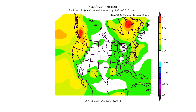First we're going to look at our temperature anomalies comparatively to normal using my analogs. My analog years are the same as the ones I used for my spring forecast: 2015, 2014, and 2005 — so the summers of 2005, 2015, and 2014, June through August.